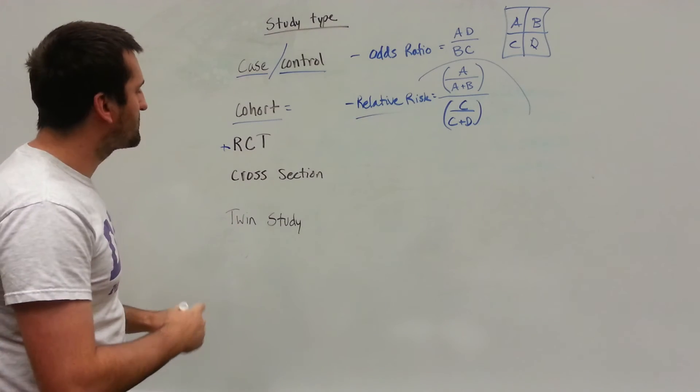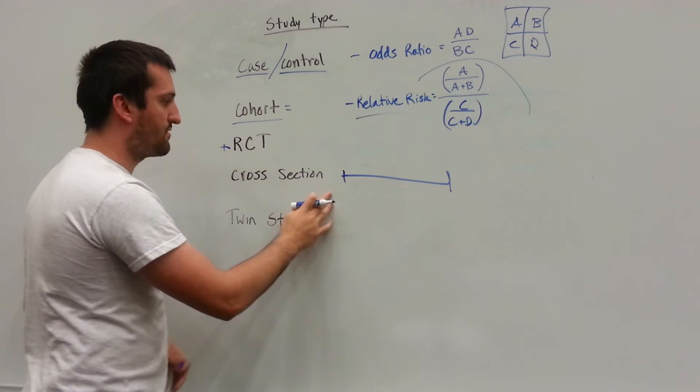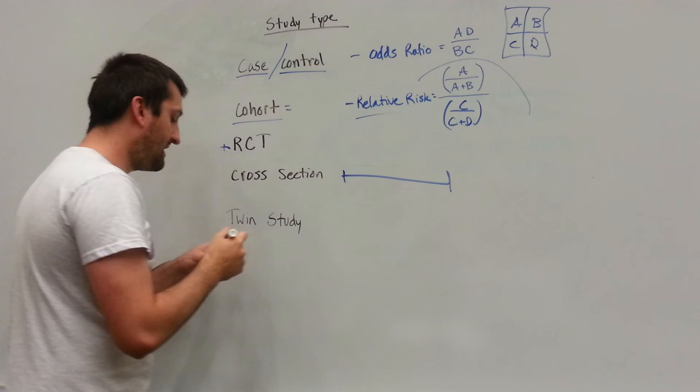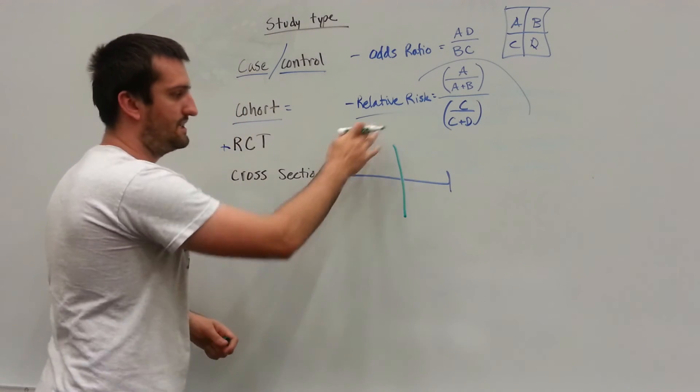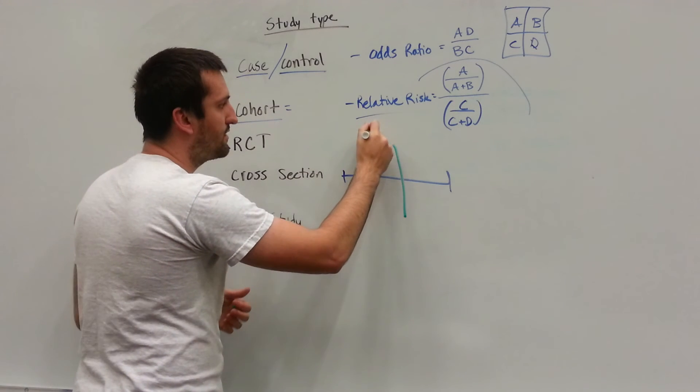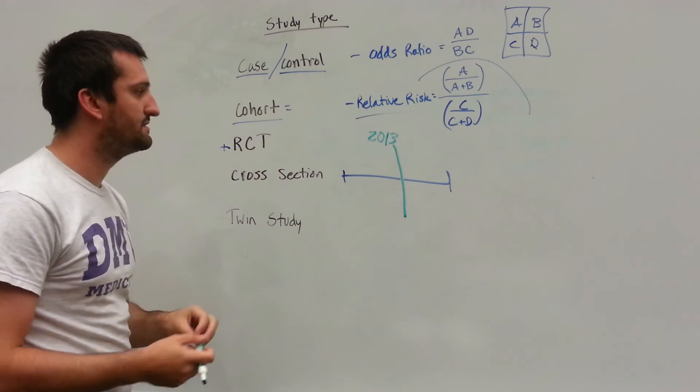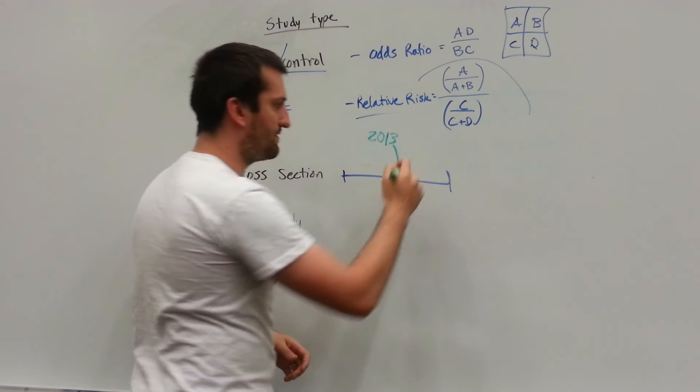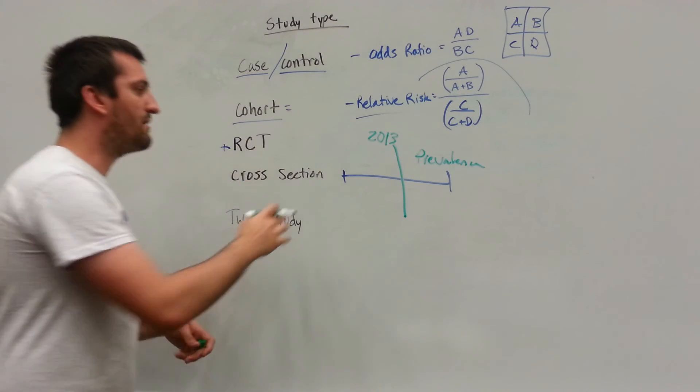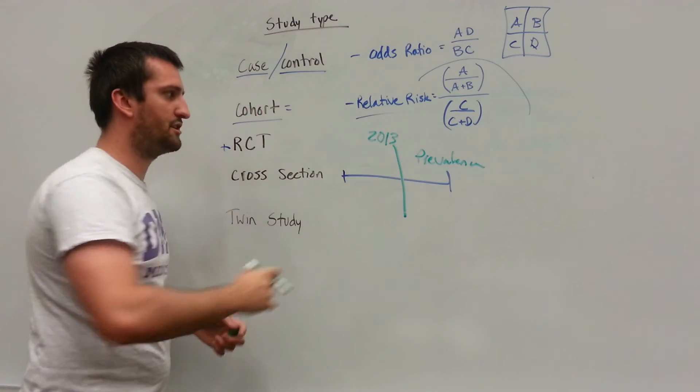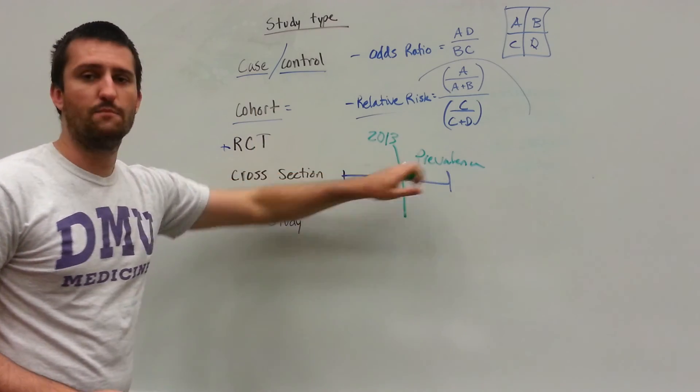So we've also got another cross-sectional study. This is where if we have a timeline and we're going to follow the lifetime of someone with diabetes, but instead cross-section is just going to take a snippet through that timeline. So in the year 2013, we're going to take a look at this certain group of patients and this is used for more prevalence. So when you think of cross-sectional studies, we're not following it throughout the disease timeline. We're looking at it in the year 2013 only. So just taking a slice, it's really going to be dealing with the prevalence of the disease.